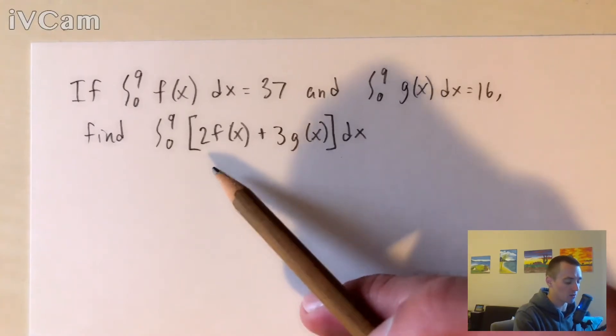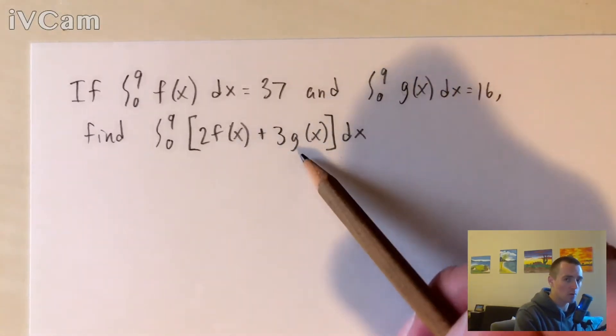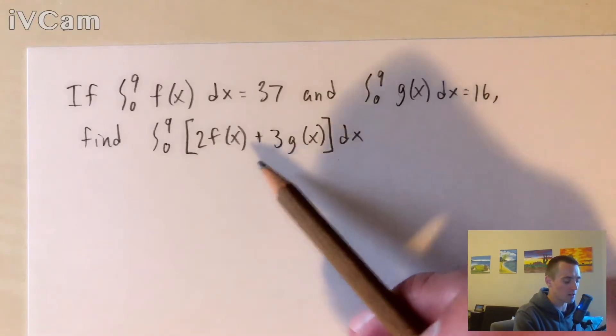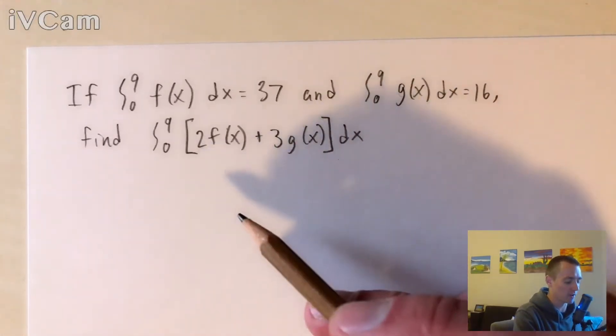if we have an integral of two things being added together, we can instead find the integral of each of those individual things and add the full integrals together.